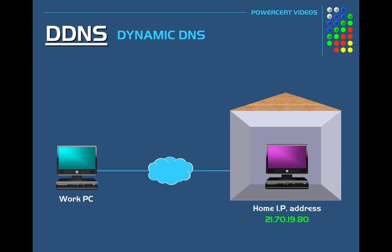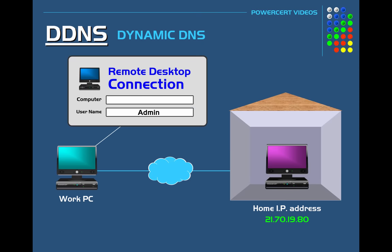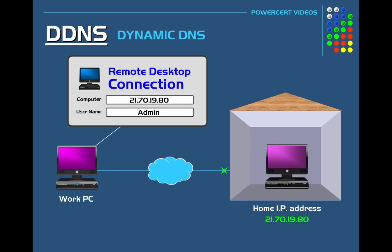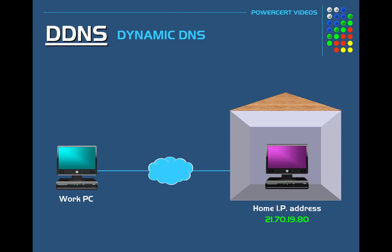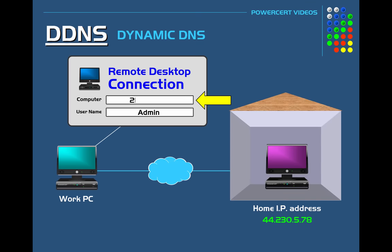Let's do an example. Say you're at work and you want to access your home computer using Microsoft Remote Desktop. You would open the remote desktop service from your work computer, type in the IP address for your home, enter the password, and you're connected. You already knew the IP address because you wrote it down or memorized it. However, since you have a home account with your internet service provider, your IP address is dynamic and will change periodically. If it changes without you knowing, the next time you want to remote access your home computer, you will not be able to — because you're typing in your old IP address and not your updated one.